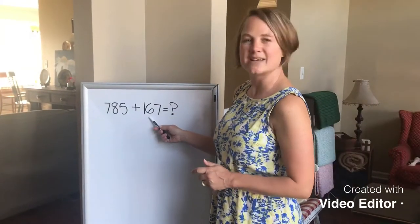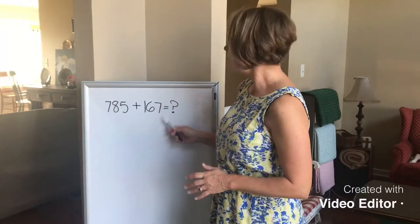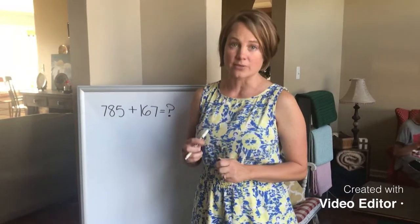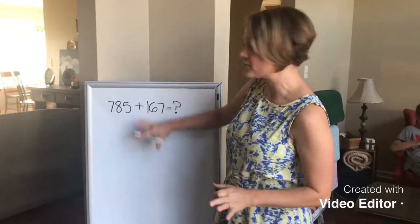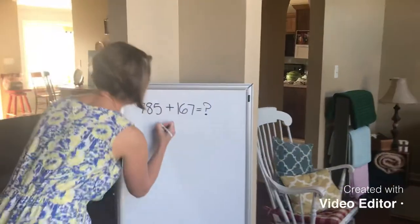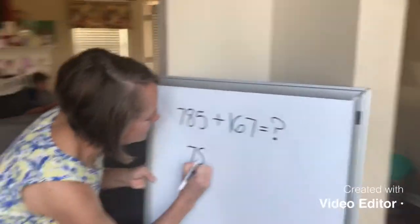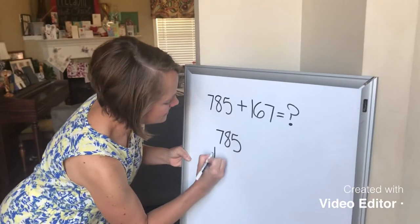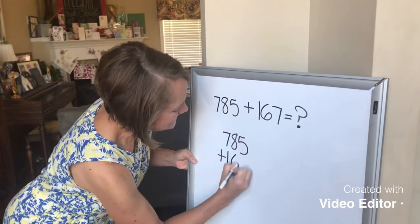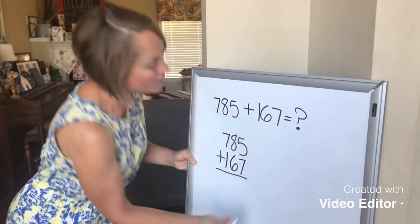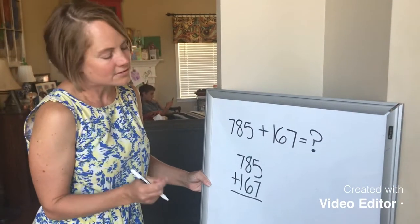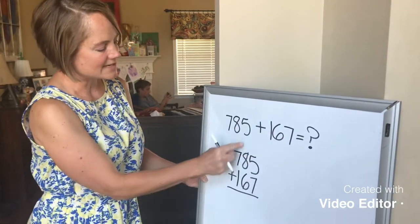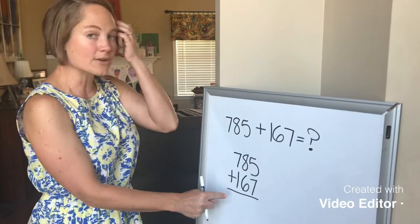785 plus 167. Now, when we use the standard algorithm, we have to write the problem vertically. So I'm going to do that. 785 plus 167. And you'll notice that I was very careful to line up my 1s and my 10s and my 100s in their own columns.